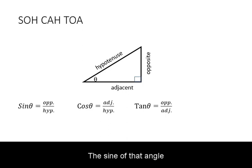The sine of that angle is then defined as the ratio of the opposite side divided by the hypotenuse, the cosine of that angle is defined as the adjacent side divided by the hypotenuse, the tangent of that angle is defined as the ratio of the opposite side divided by the adjacent side.